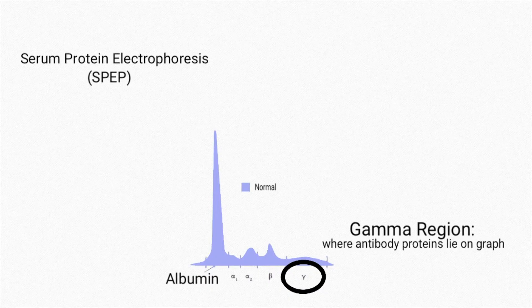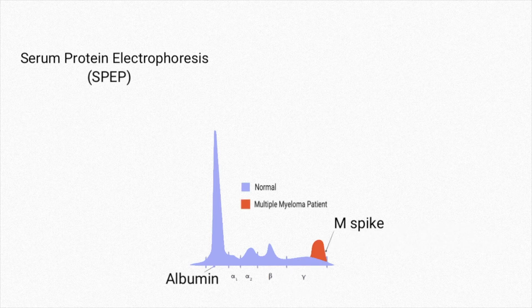M-spikes are detected by a test called serum protein electrophoresis, or SPEP, and normally they're found in the gamma region of the graph. It measures the output of the myeloma cells.